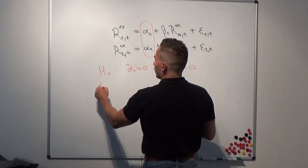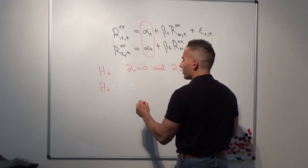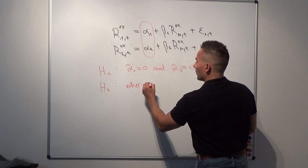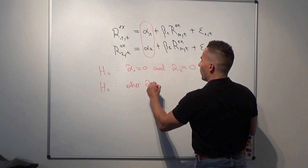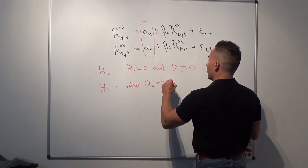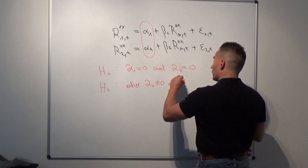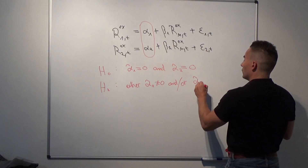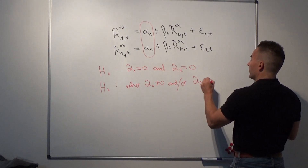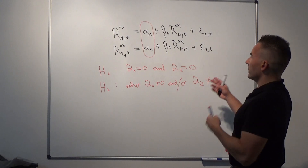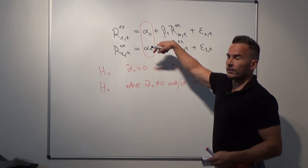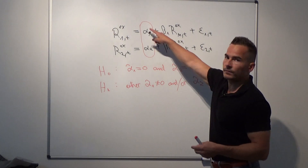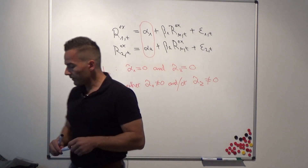Under the alternative hypothesis H1, either alpha hat 1 is unequal to zero, or alpha hat 2 is unequal to zero — or both. It is enough if just one of these is unequal to zero, since we test those parameters simultaneously.